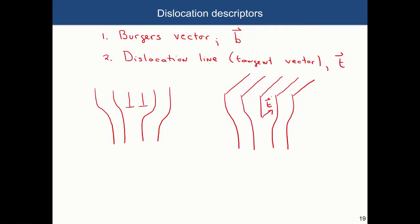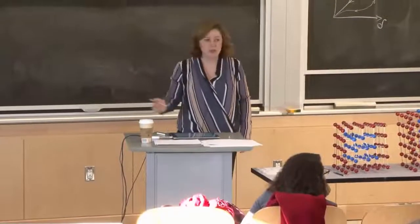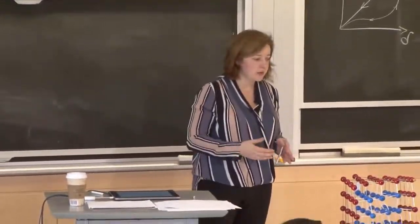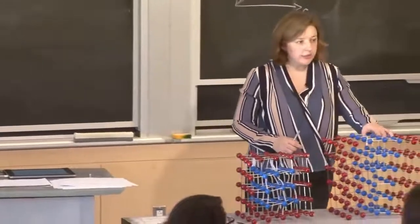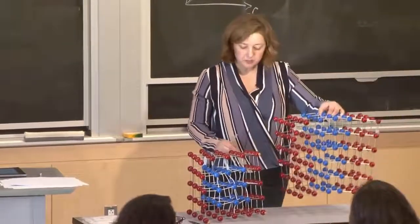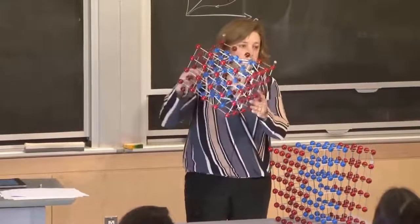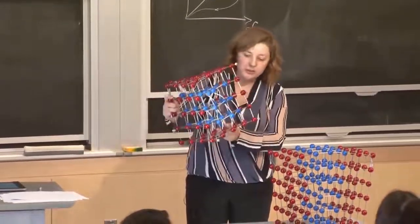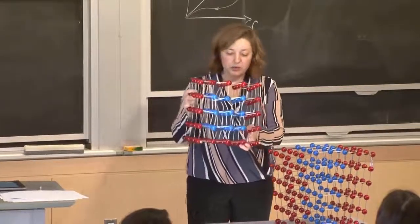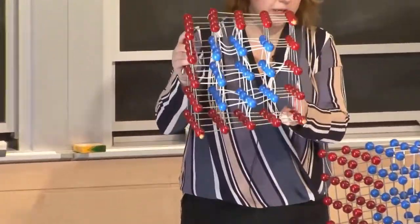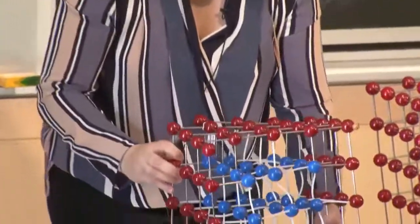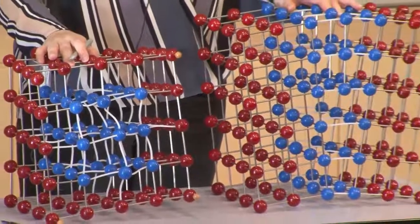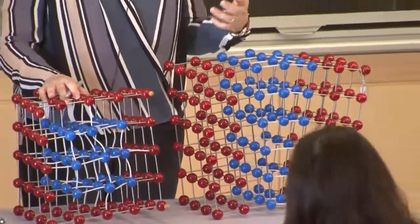Because there are these two descriptors — the Burgers vector and the dislocation line — we will see that there are two very specific classes of dislocations. One is called edge dislocations, which are the ones shown here. The other type is called screw dislocations, which are slightly more difficult to visualize. They are described by different descriptors and also form through a different mechanism in the material.